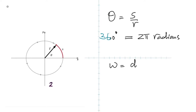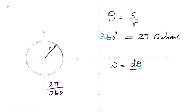In linear motion, we have heard of velocity, and velocity is displacement over time. But in rotation, velocity is replaced by angular velocity — the symbol is omega. Omega stands for angular velocity, and it's defined as dθ/dt — the angle divided by the time. The unit of angular velocity is radians per second. So instead of meters per second, we have radians per second.